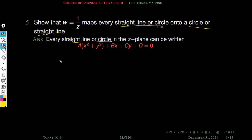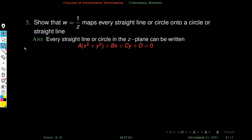This general form represents both circles and straight lines depending on the values of A, B, C, D. If A = 0, the equation Bx + Cy + D = 0 is a straight line. If A ≠ 0, it is the equation of a circle.